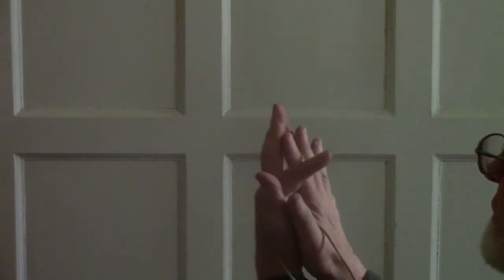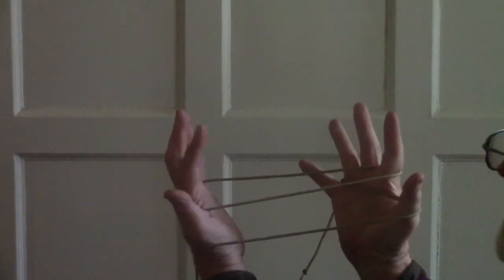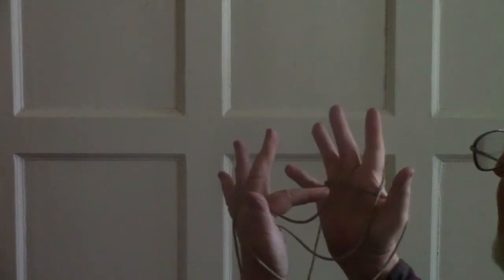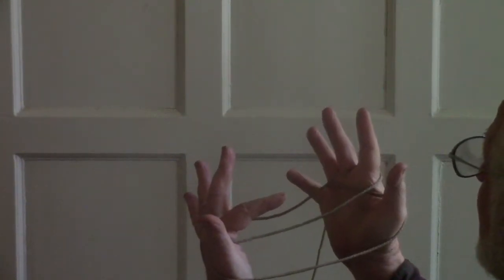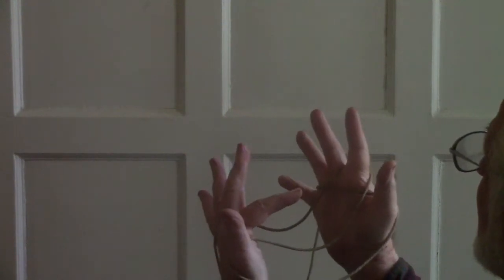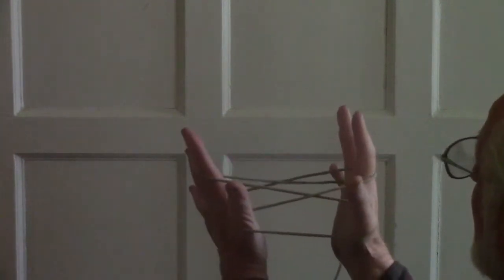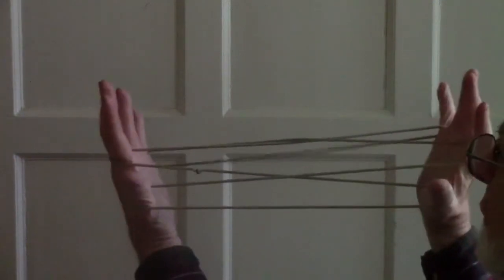Right index finger under the palm string. Left index finger under the right palm string. Between the two strings of the loop on the index finger of the right hand. Hold that back. Opening A.